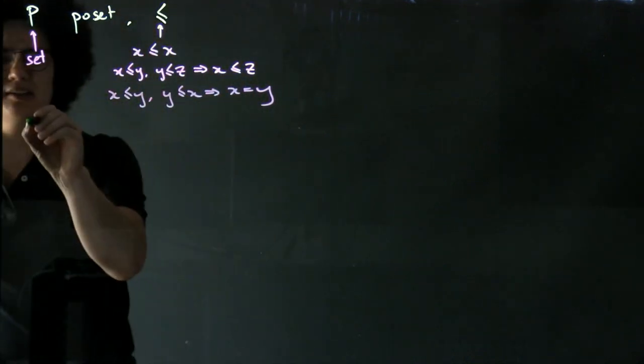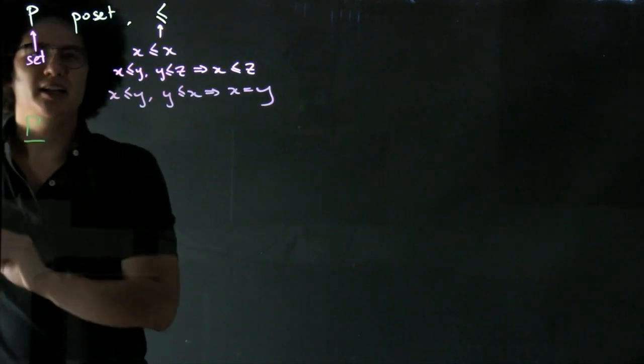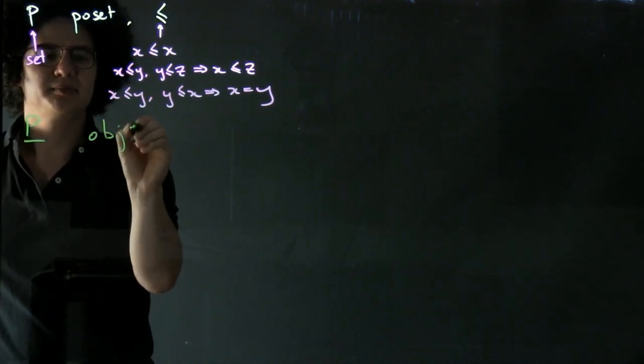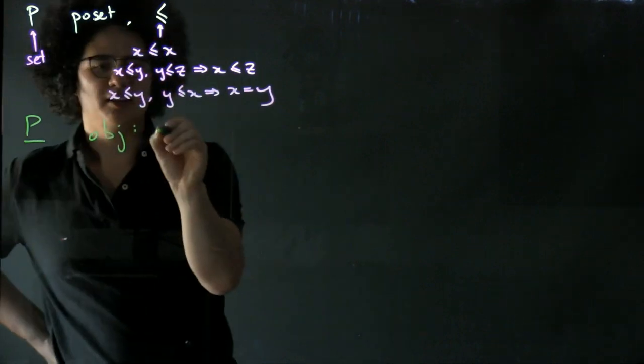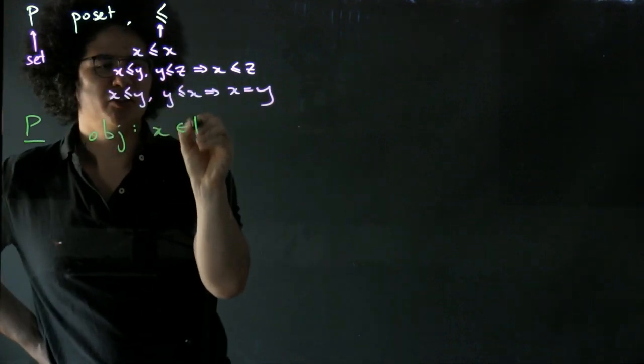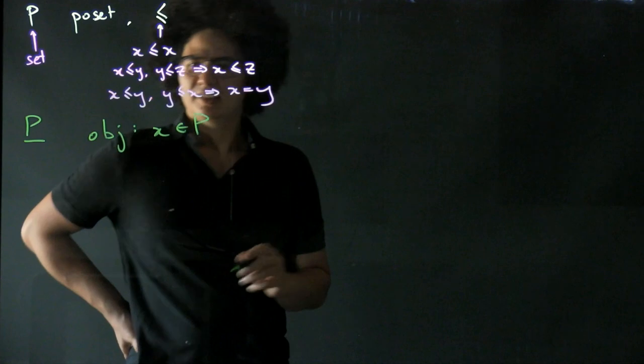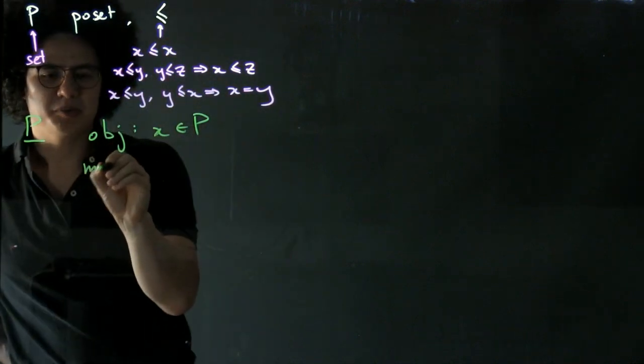So we call our category P underline. And we want to say what its objects are. So its objects are going to be elements of P. And now we want to say what its morphisms are.